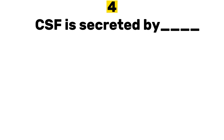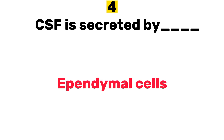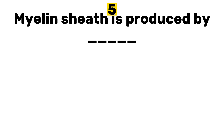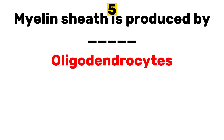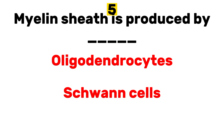Number 4. Cerebrospinal Fluid is secreted by: Ependymal Cells. Number 5. Myelin Sheath is produced by: Oligodendrocytes and Schwann Cells. Oligodendrocytes secrete myelin sheaths in the central nervous system, while Schwann Cells secrete myelin sheaths in the peripheral nervous system.